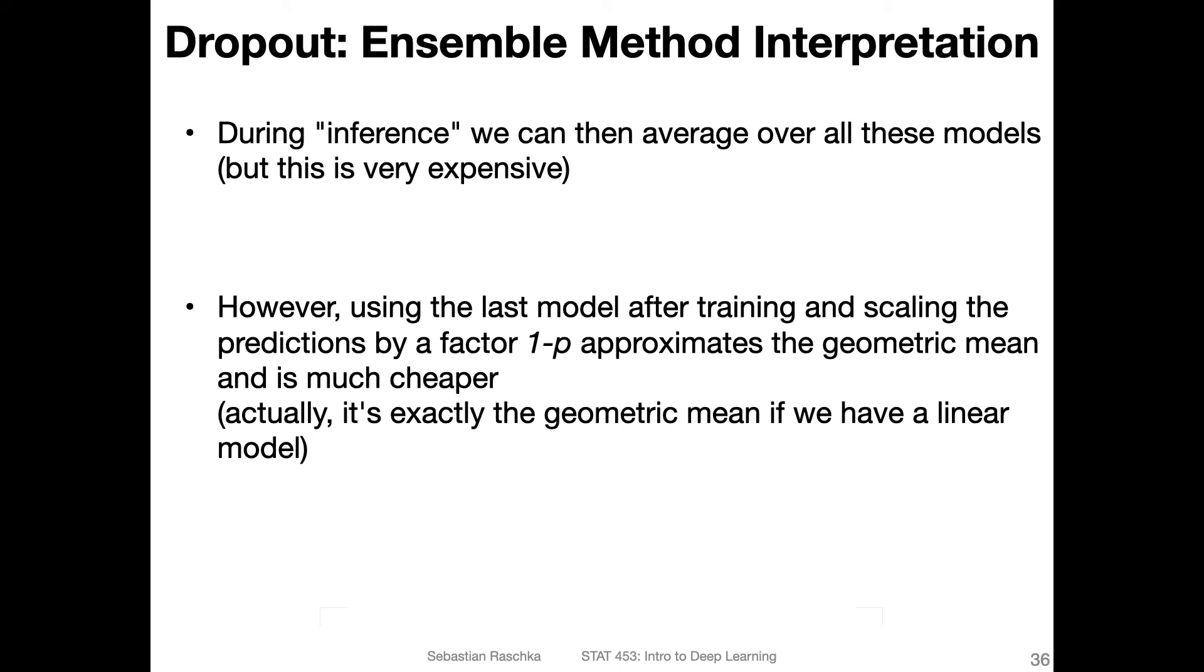But this still doesn't solve our problem that this is very computationally expensive, because we have to consider 2^10 models for averaging. And here, this is also assuming that we only have one hidden layer with only 10 units. If we have a hidden layer, let's say with 64 units, then this would be really infeasible. So what do we do about that? How can we address this problem?